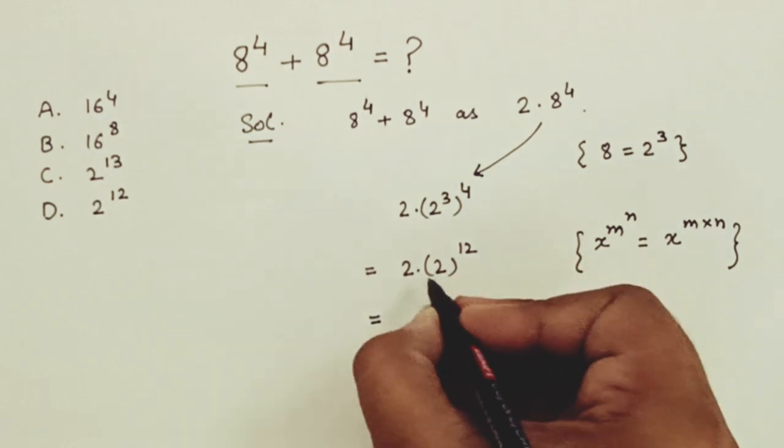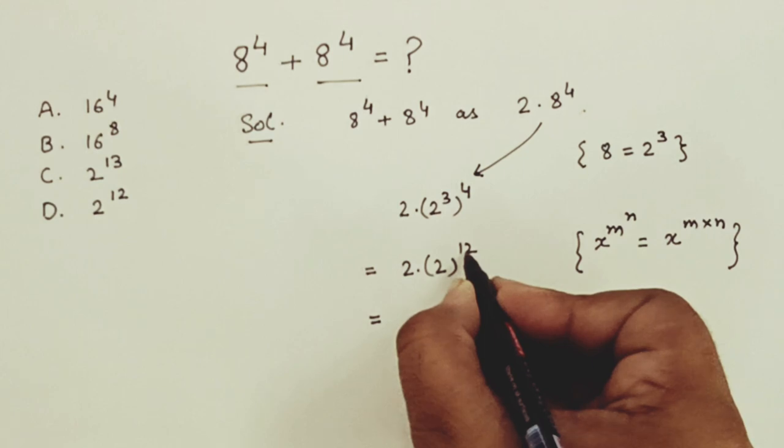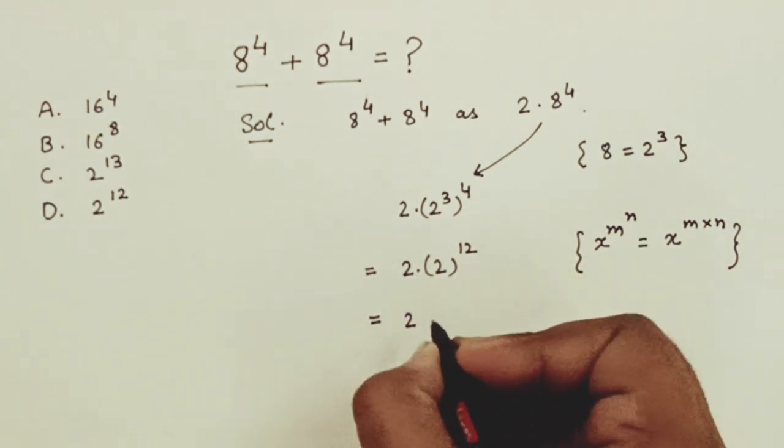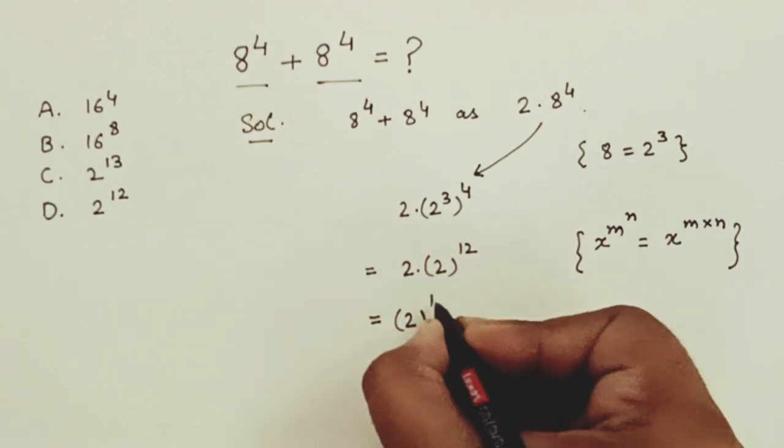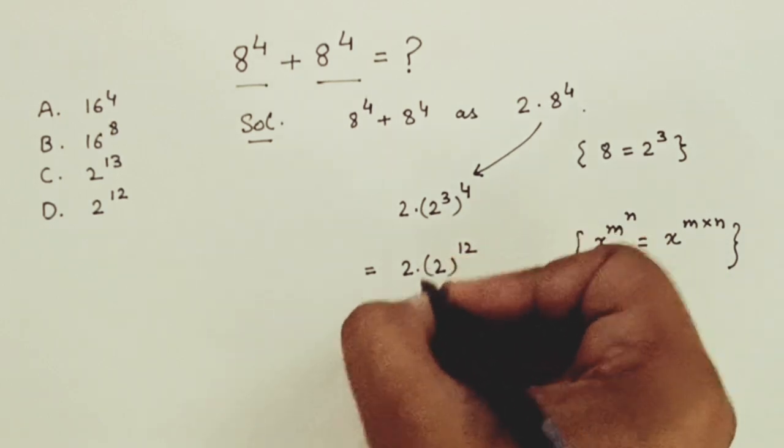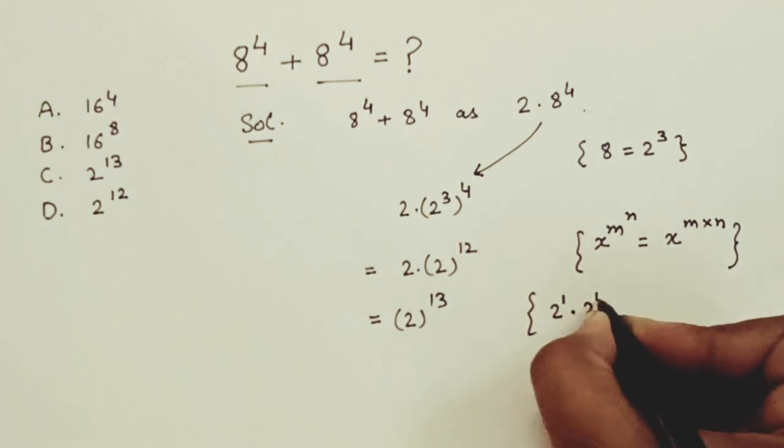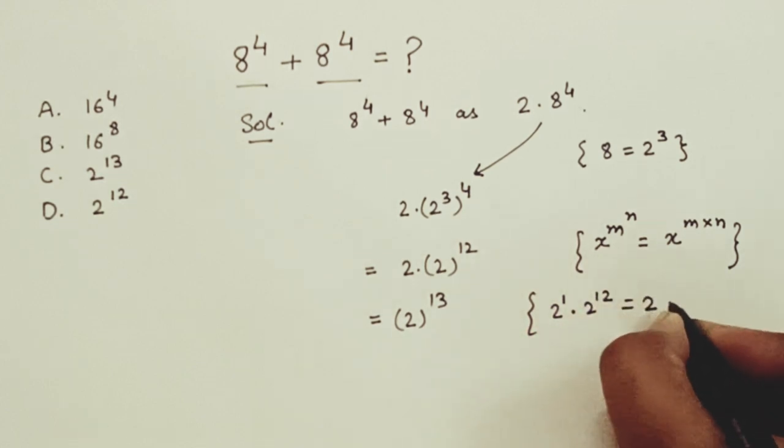So, this will be 2 raise to the power 12 into 2. This is 2 raise to the power 13 because 2 raise to the power 1 into 2 raise to the power 12 is equal to 2 raise to the power 1 plus 12.